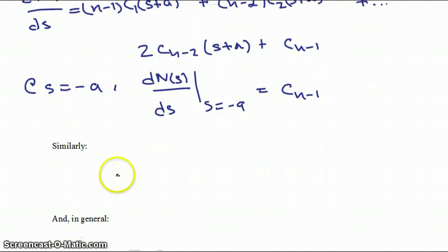Similarly, if we take our second derivative with respect to s of our numerator, or both sides, and evaluate that at s equals minus a, then we get 2 times Cn minus 2.